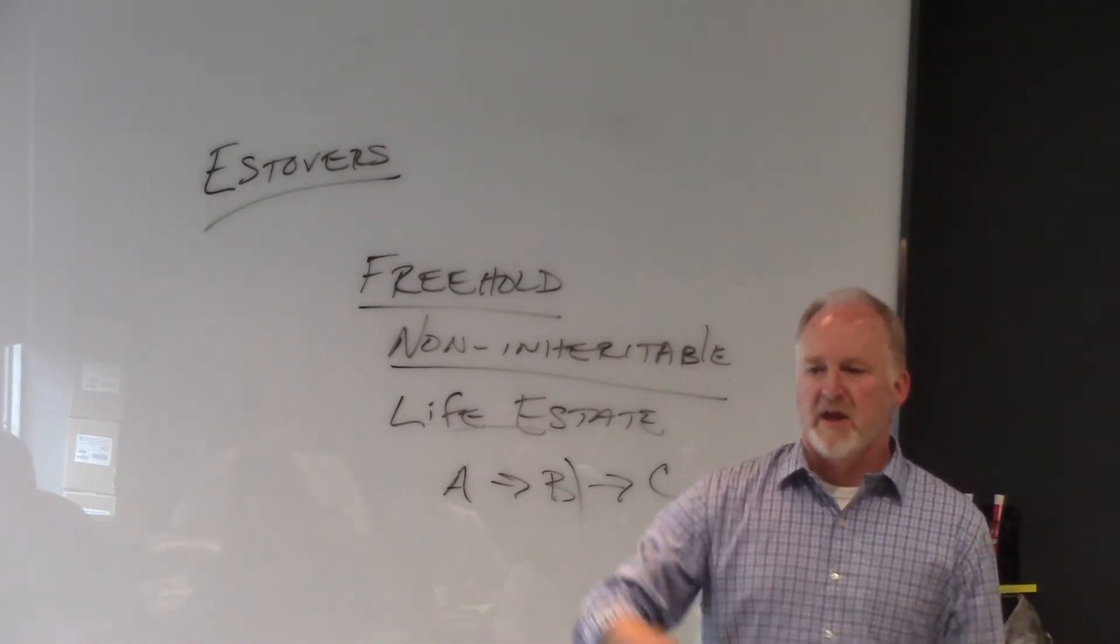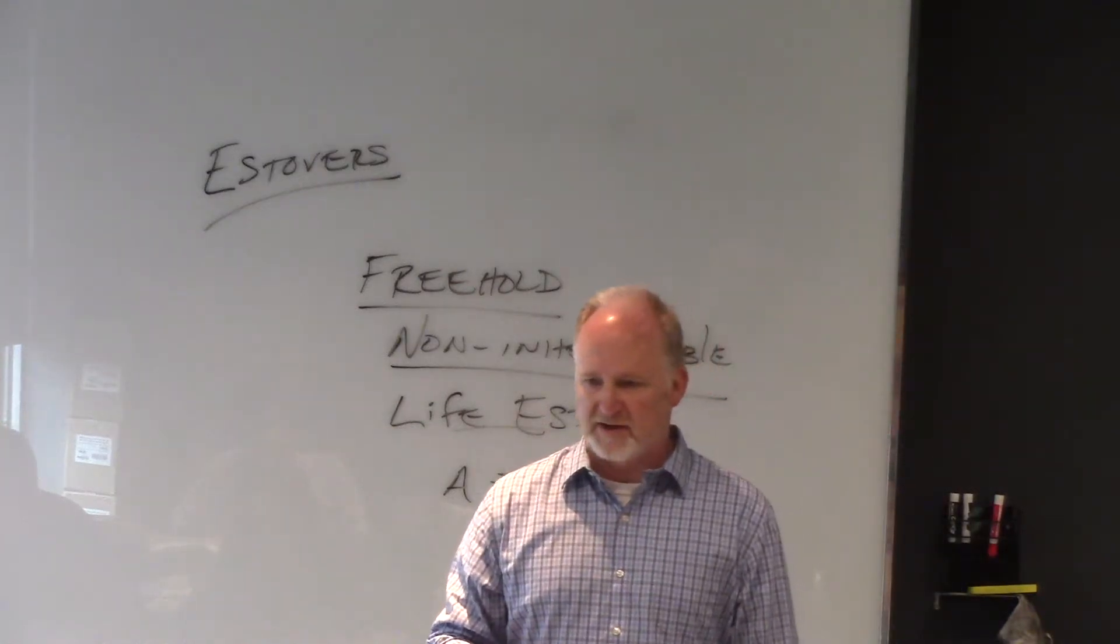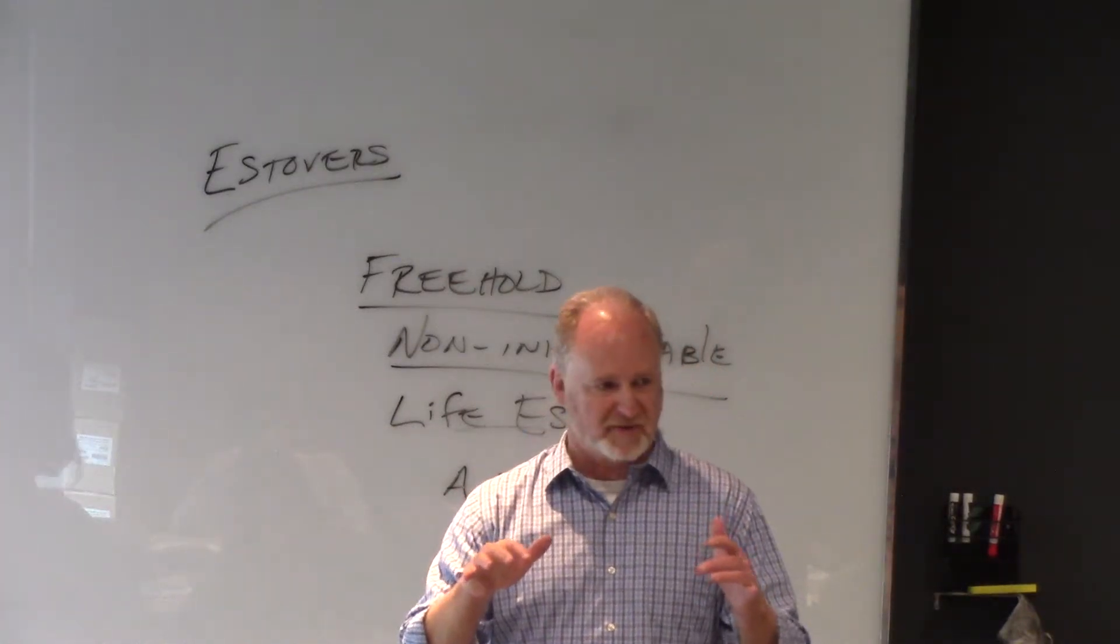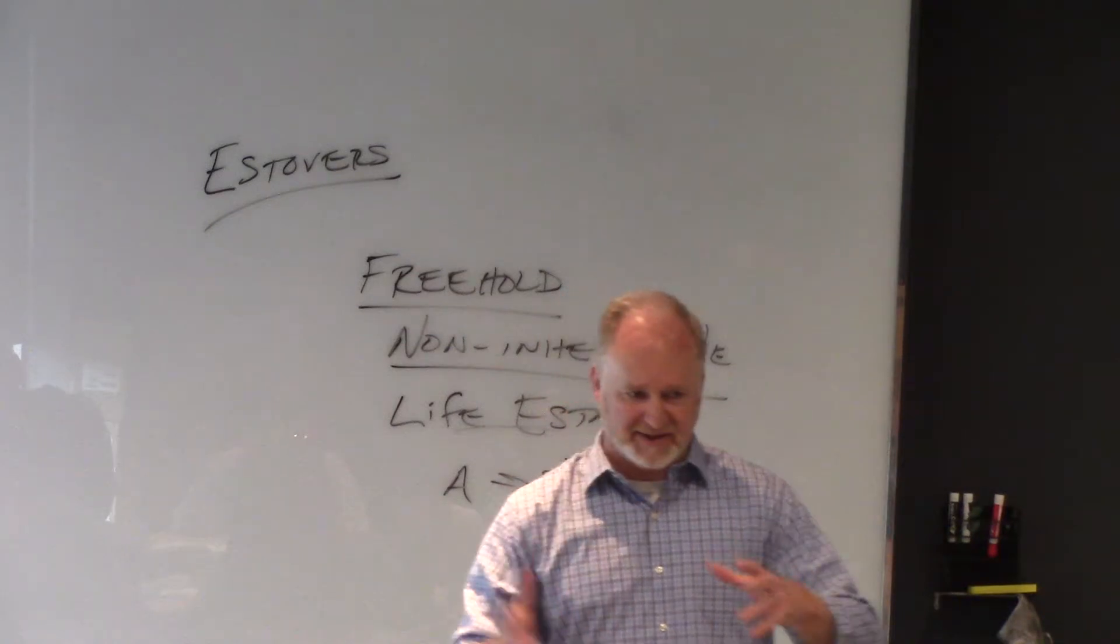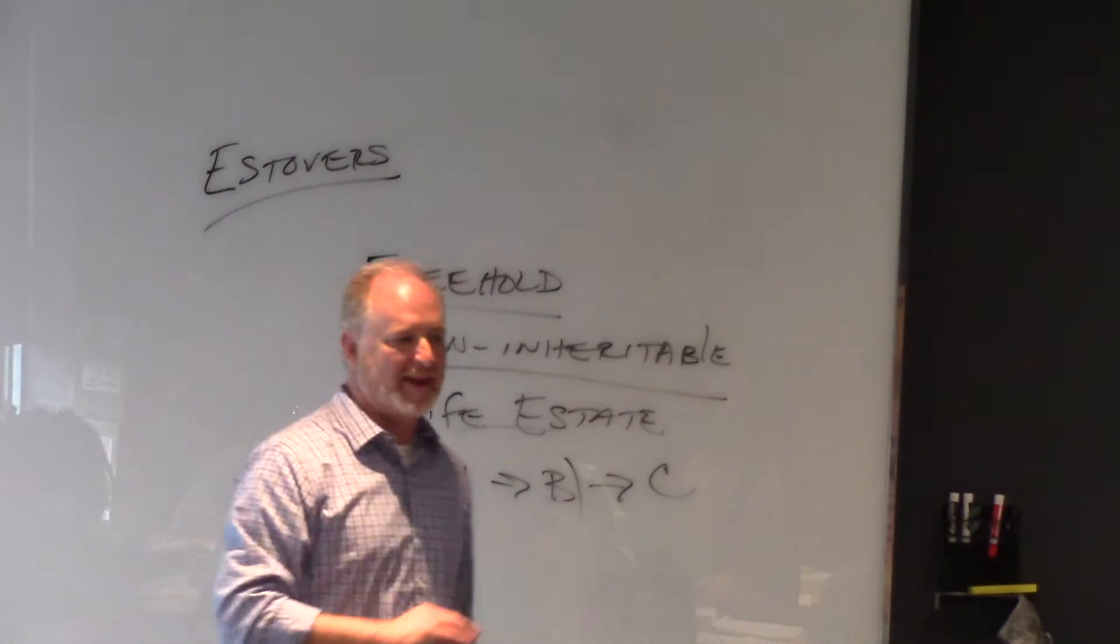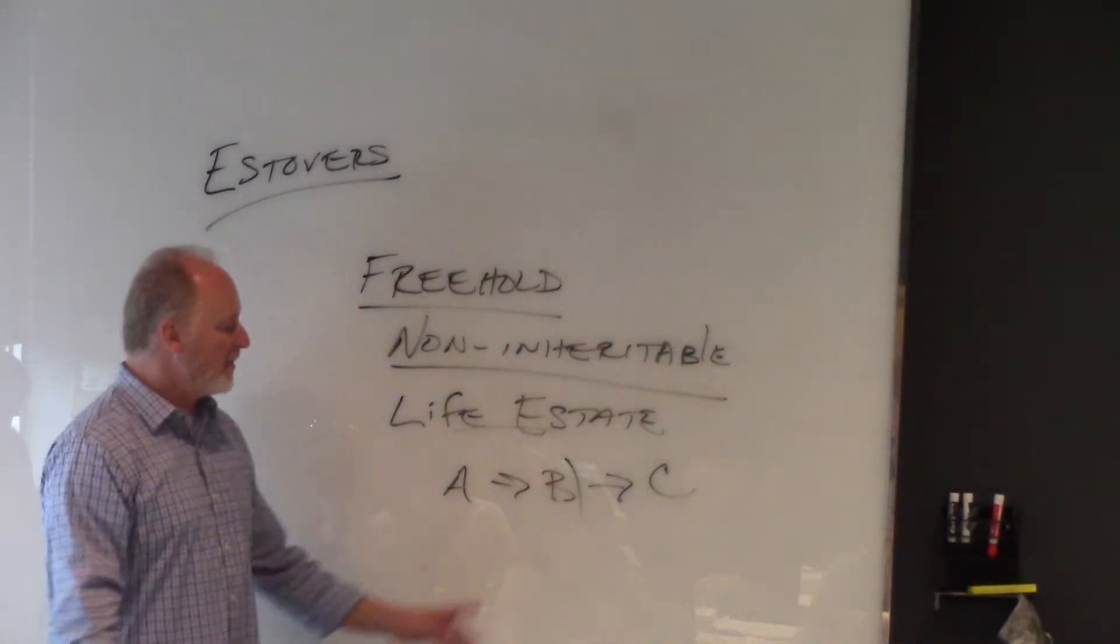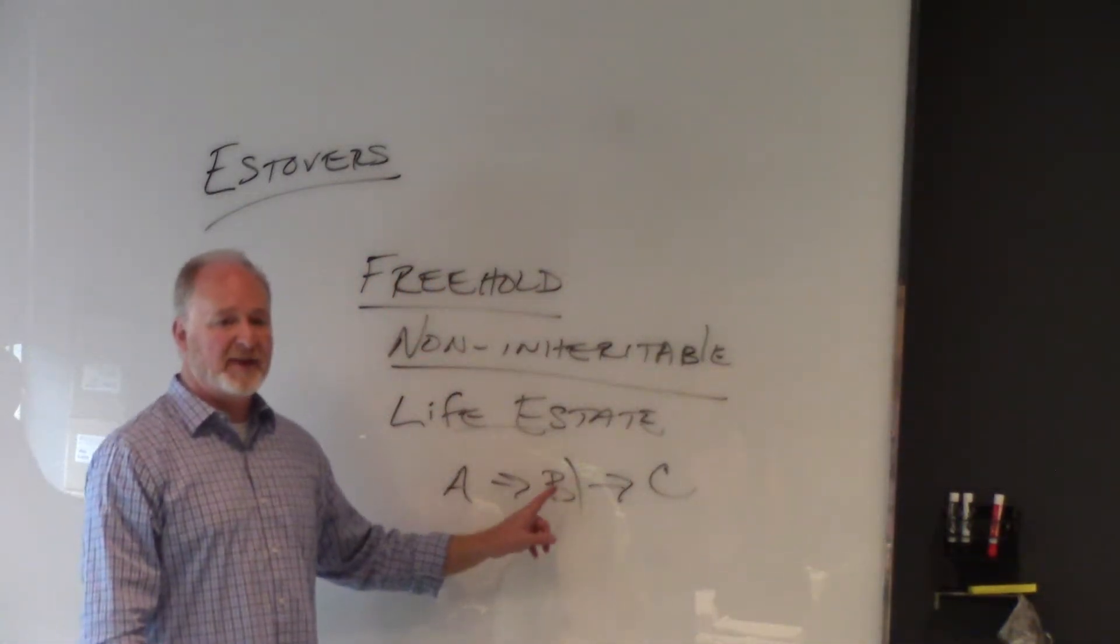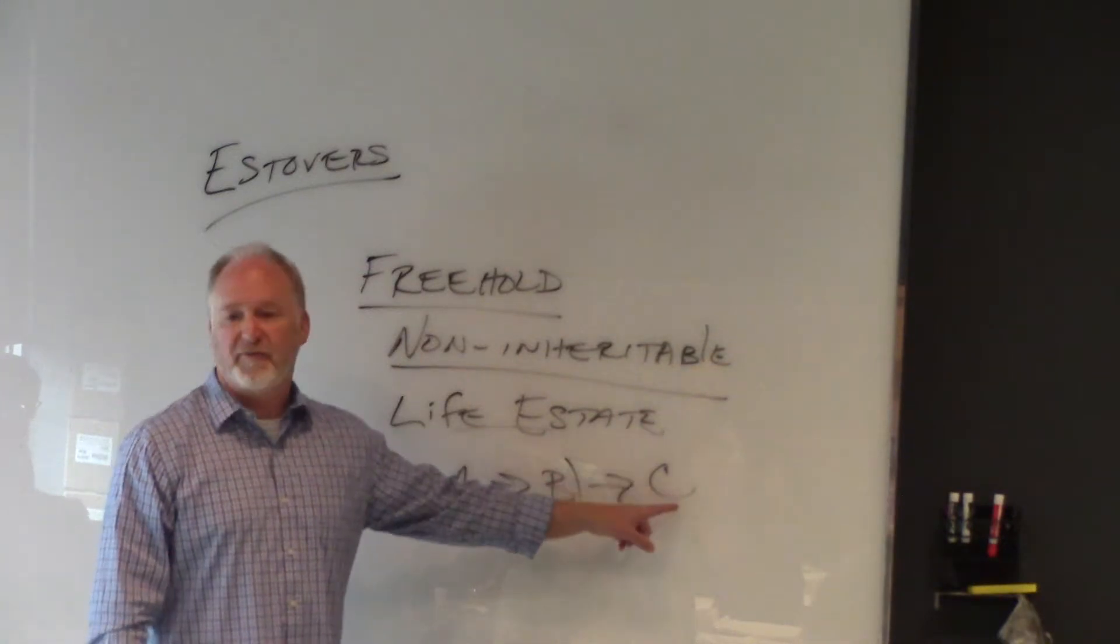The life tenant would not have a right to go onto those 40 acres of land, cut down the timber, and sell it as timber. Because the life tenant only has one obligation by law. Their obligation by law is simply that they maintain the property for the future interest.